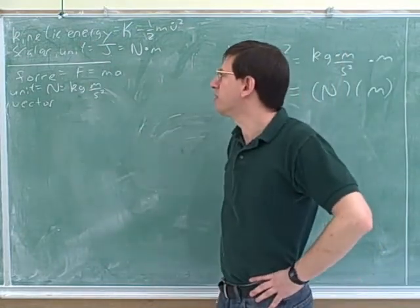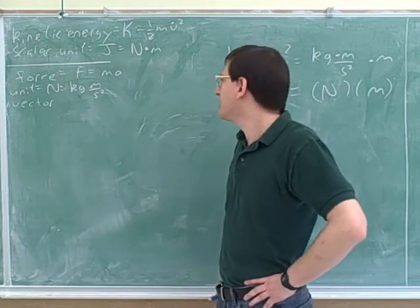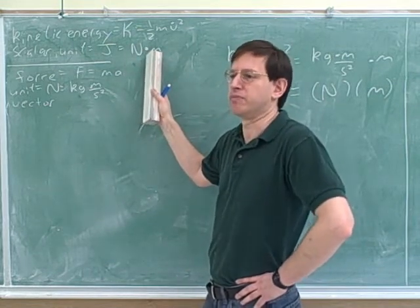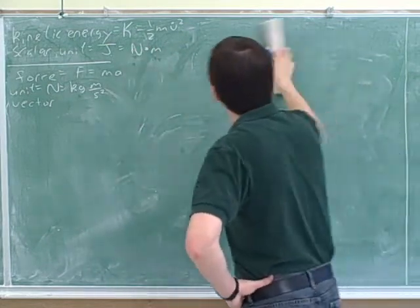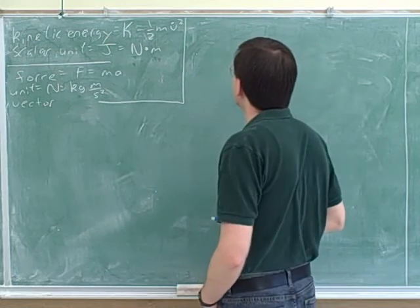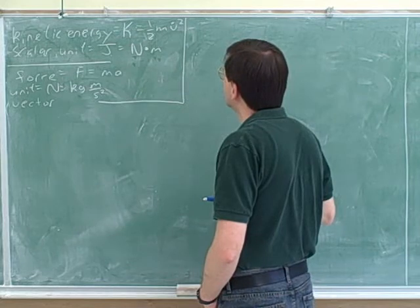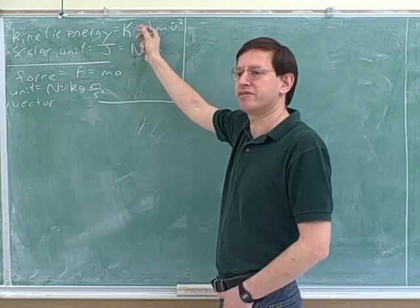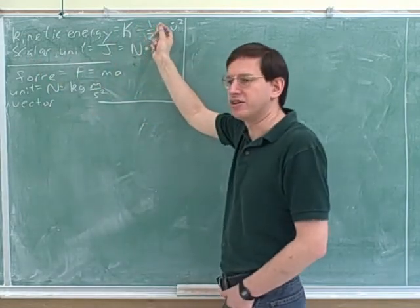And now we can understand what kinetic energy means more. Remember I told you it could tell you how hard it would be to bring the object to a halt? Well, now we can be more specific. It tells us, for a certain amount of force, what distance you would have to push for before it came to a halt. Or for a certain distance, what force you would have to push with to bring it to a halt. Notice that the kinetic energy has to always be positive, because mass is positive and v² is positive. Scalars can conceivably be negative, but the kinetic energy can't be negative.